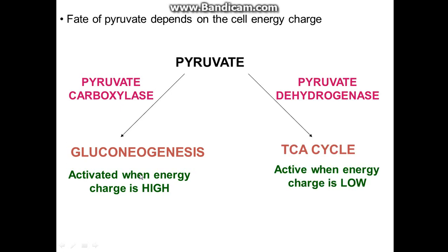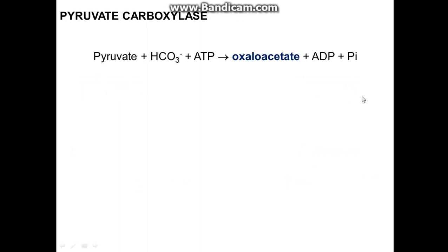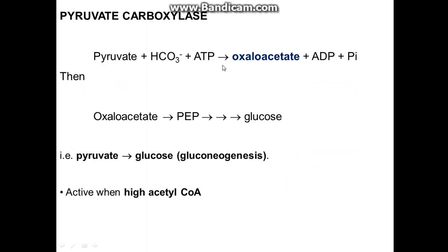The fate of pyruvate depends on cell energy charge. When you've got high ATP, you go back via gluconeogenesis via pyruvate carboxylase. When you've got low energy, you want to produce more ATP and go via the TCA cycle via pyruvate dehydrogenase, which will be next episode. In gluconeogenesis, pyruvate is converted to oxaloacetate using energy from ATP. This reverses the irreversible steps of glycolysis — through hexokinase, then PFK1 — using different enzymes.